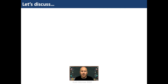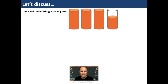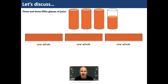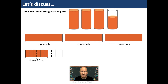Let's look at three and three fifths glasses of juice. I can draw three wholes and three fifths — splitting a whole bar into five parts and identifying three of those. Once again, we're dealing with a fraction that isn't tenths or hundredths, so we use equivalence. Each of those fifths can be split into two equal parts to create tenths, so three fifths are the same as six tenths. Three and three fifths converts to three and six tenths. We can use three ones and six tenths, and write that in decimal notation as 3.6.